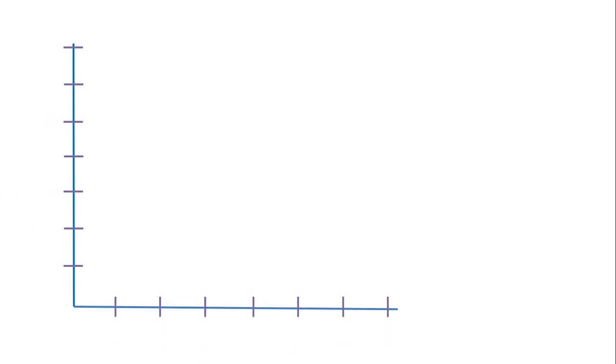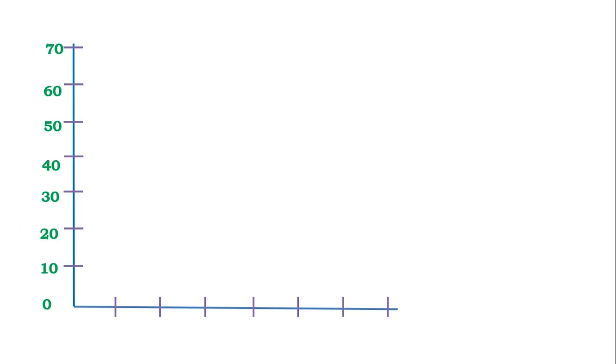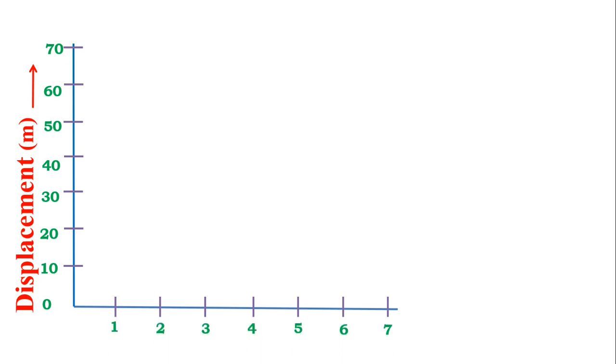This is the Y axis and the other is the X axis. If the Y axis is divided into equal parts and the X axis is also divided into equal parts, and if displacement values are taken on the Y axis — 0, 10, 20, 30, 40, 50, 60, 70 meters — and on the X axis time in seconds — 1, 2, 3, 4, 5, 6, 7 seconds — then this is the structure of a displacement time graph.